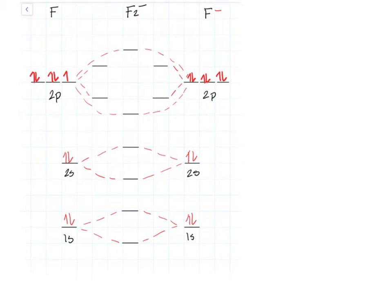First I'm going to label it. This is going to be sigma 1s, sigma star 1s, sigma 2s, sigma star 2s, and then sigma 2p.